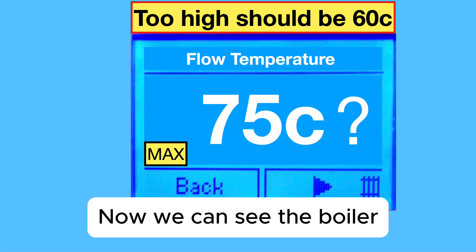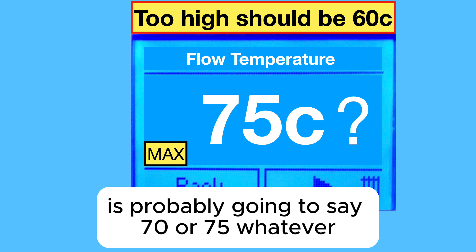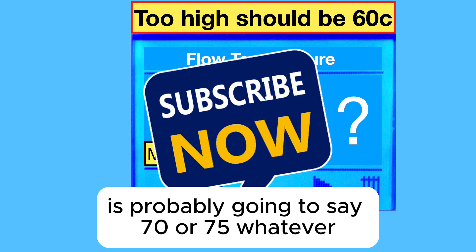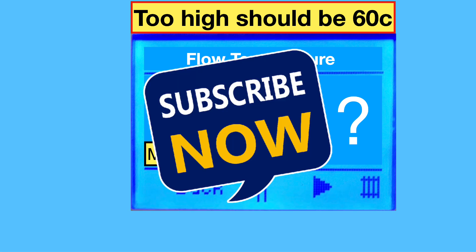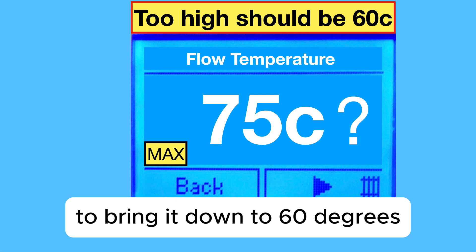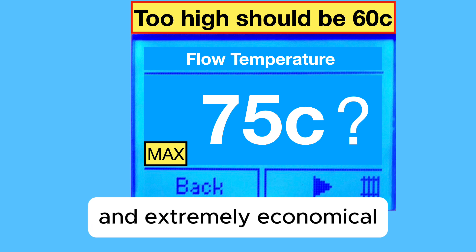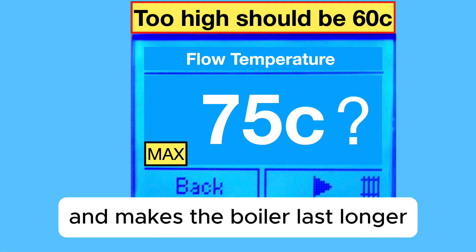Now we can see the boiler central heating flow temperature. It's probably going to say 70 or 75, whatever. But we're going to take a step-by-step guide to bring it down to 60 degrees, which makes it lean, green and extremely economical and makes the boiler last longer.